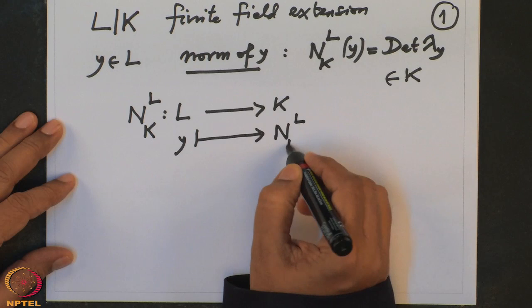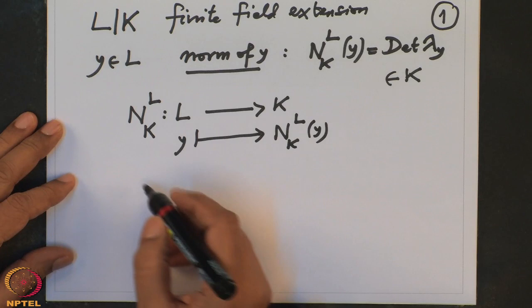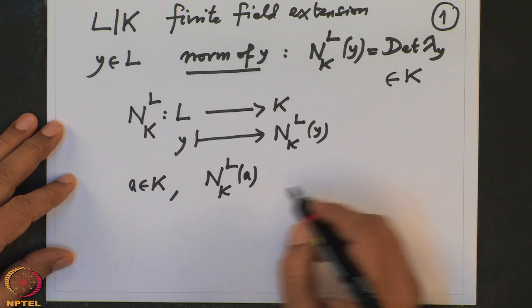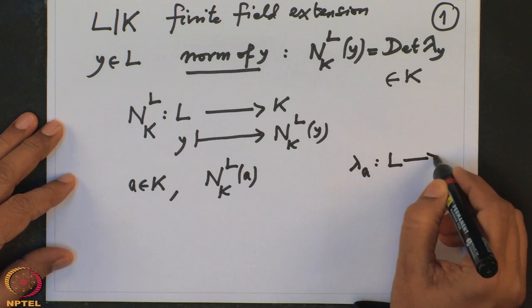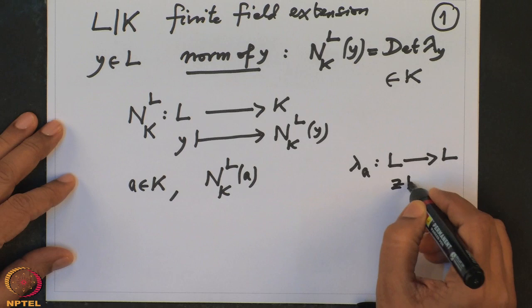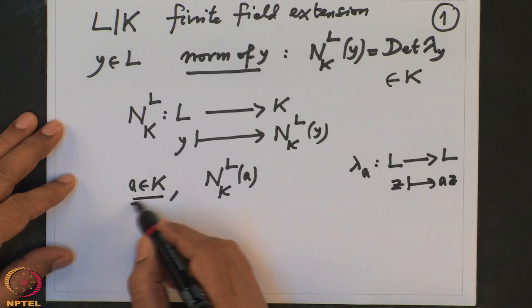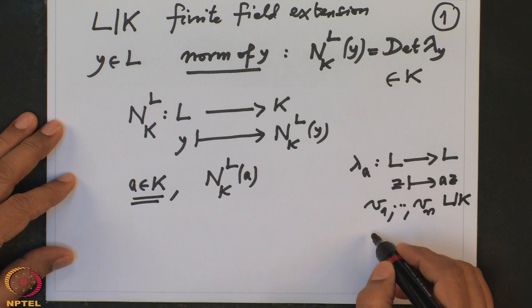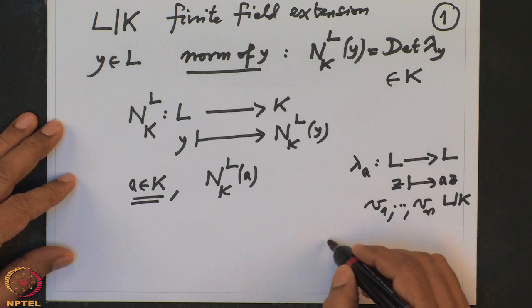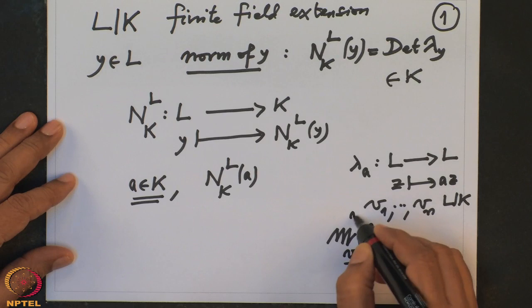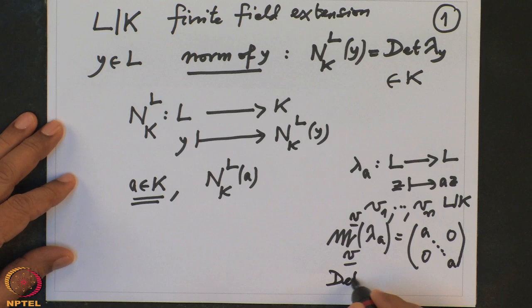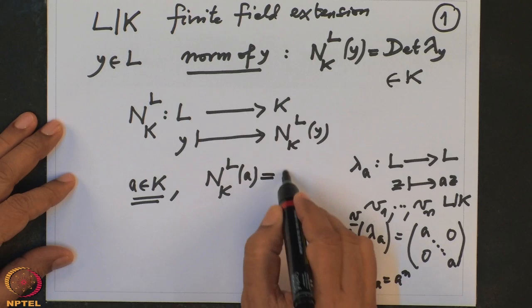First, if A is in K, we compute the matrix of lambda_A, the multiplication-by-A map sending any Z to AZ. With respect to any basis V_1 to V_N of L over K, lambda_A has a diagonal matrix with all entries equal to A. Therefore the determinant of lambda_A is A^N, where N is the degree of the field extension.